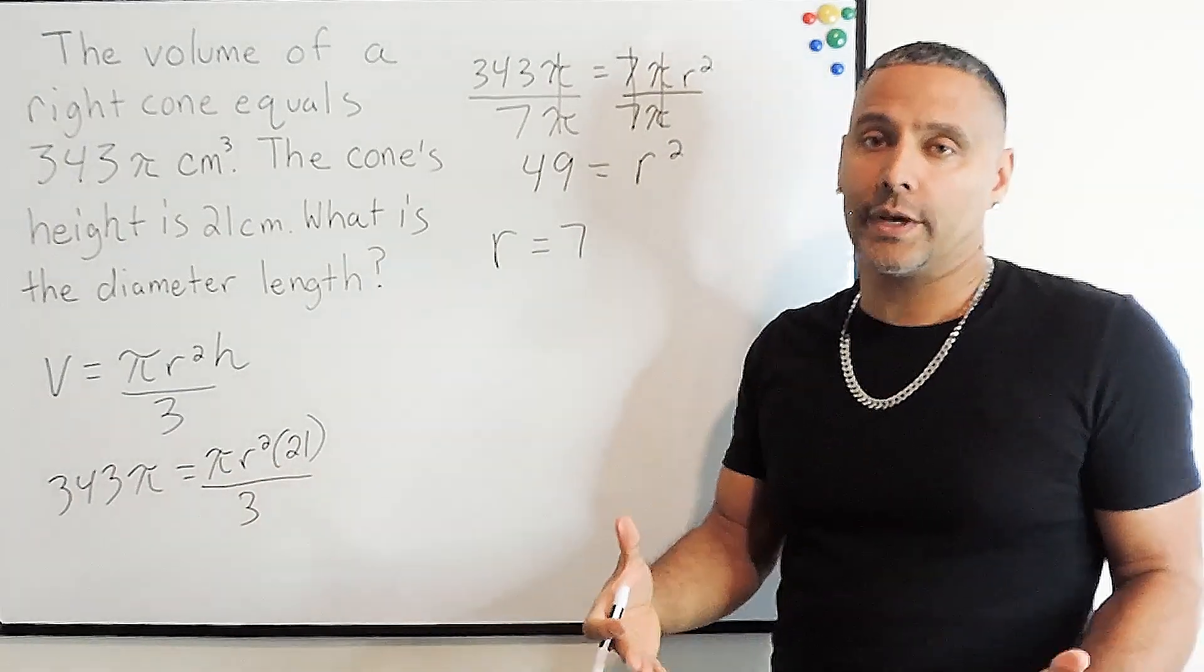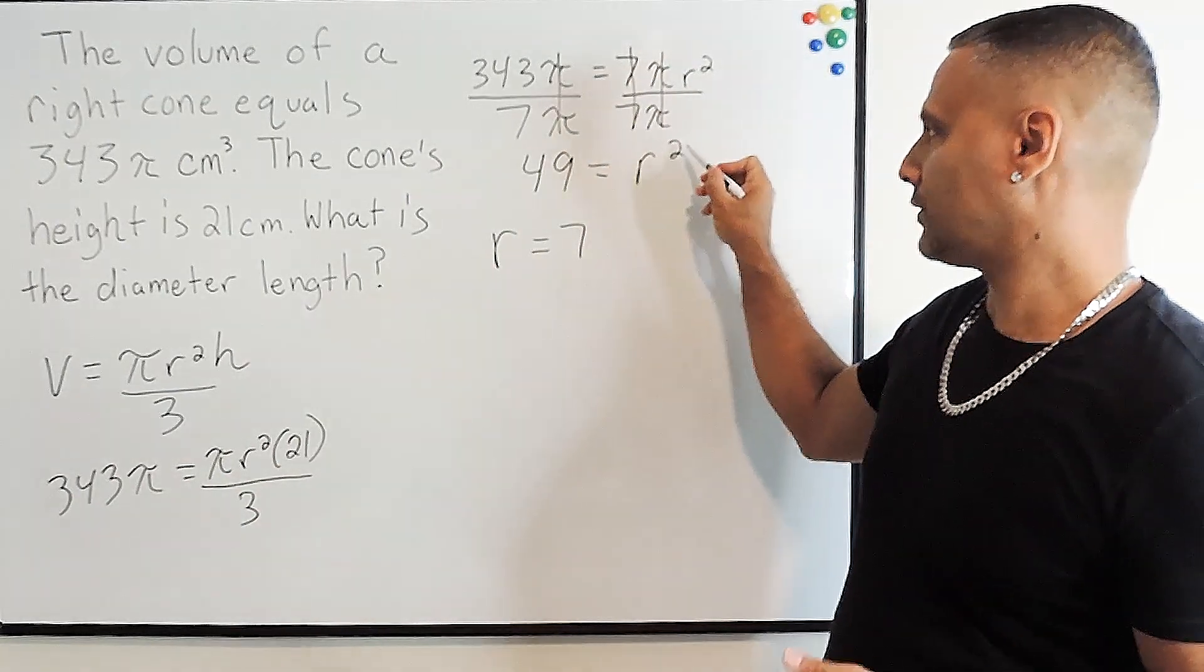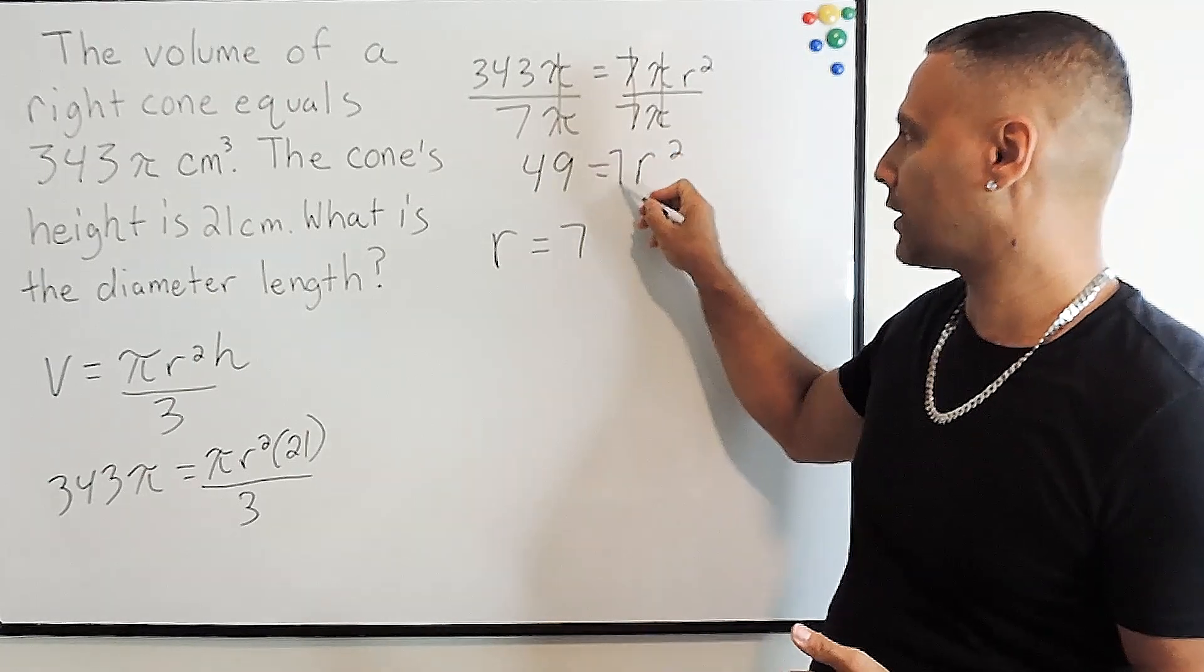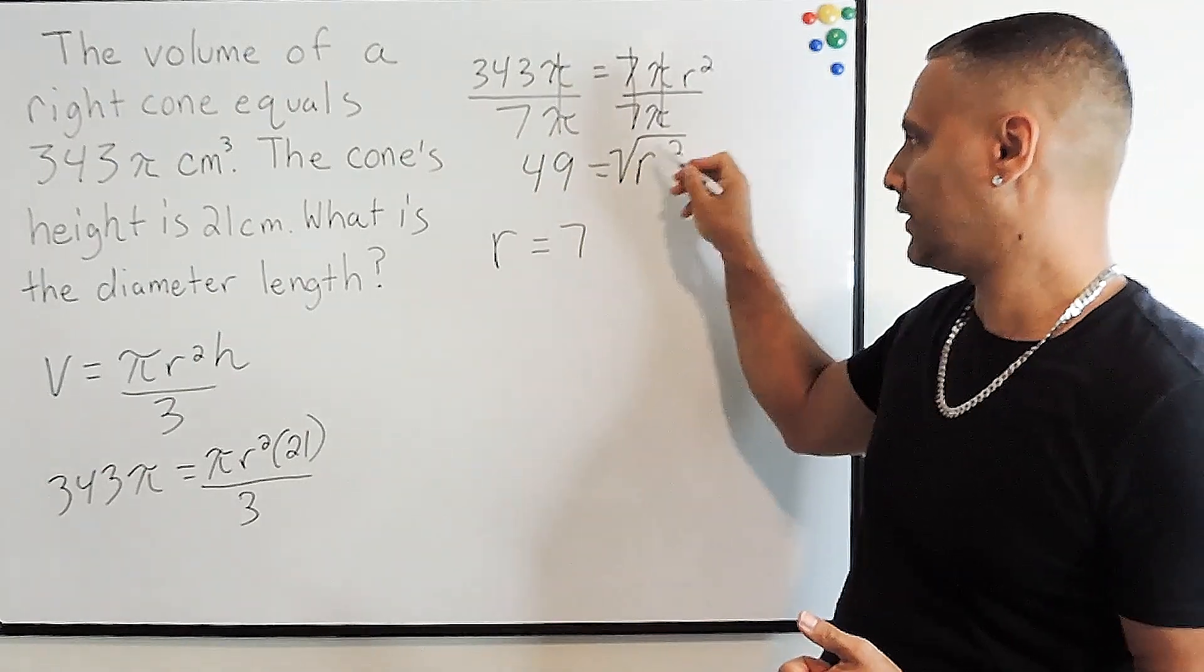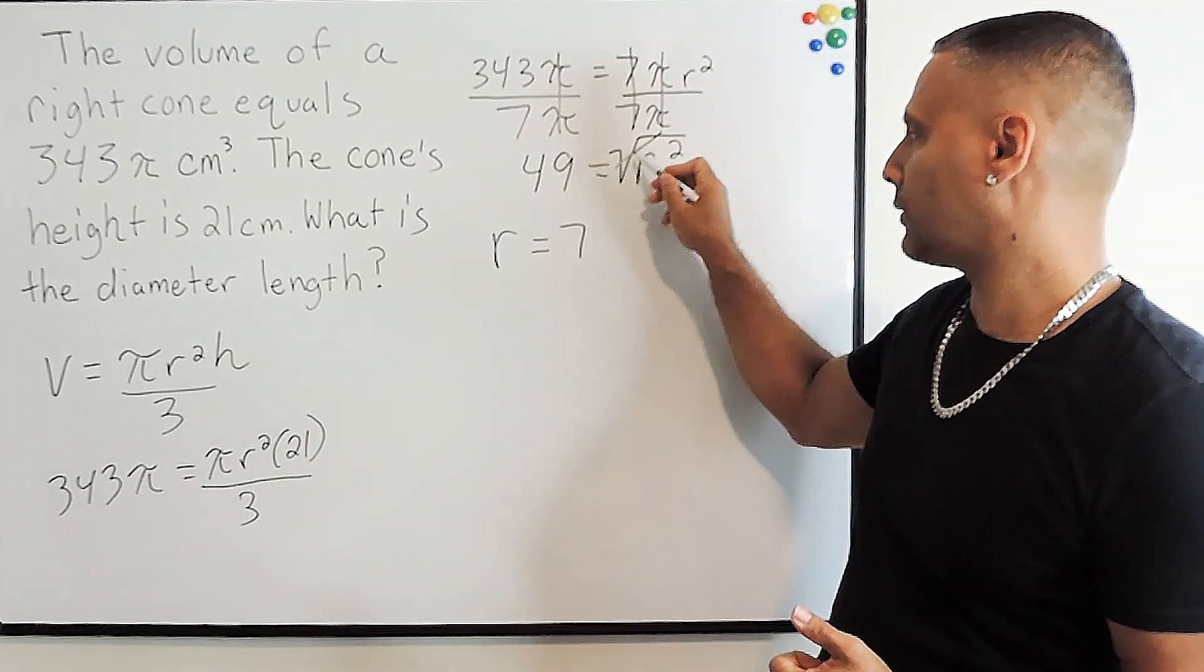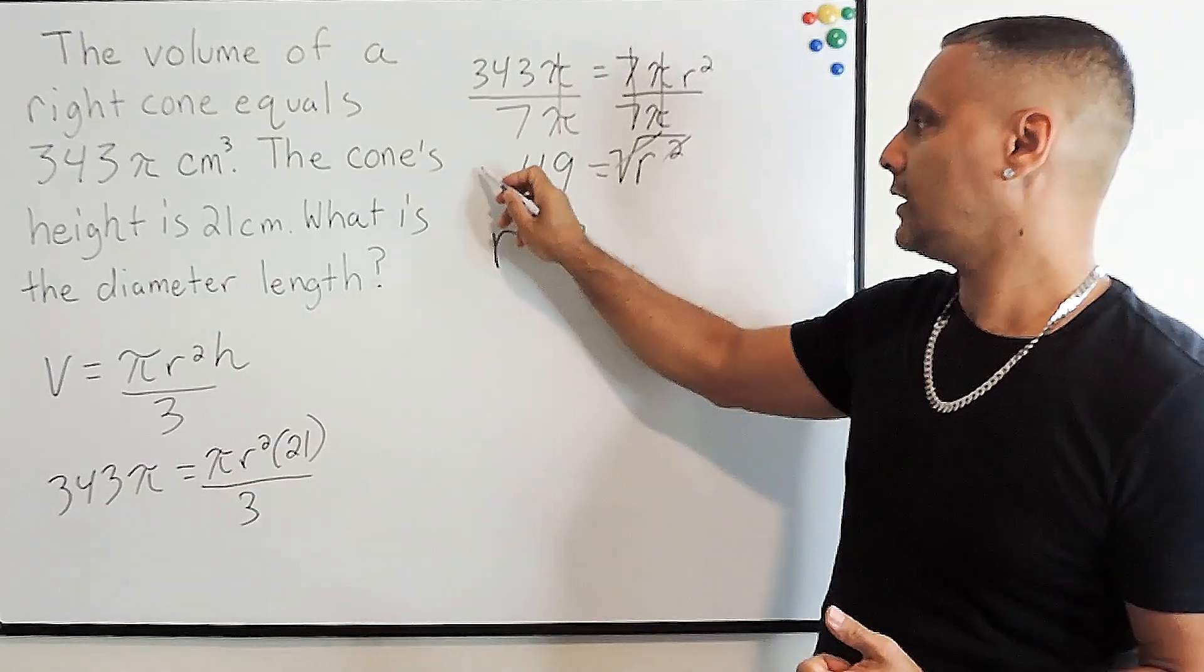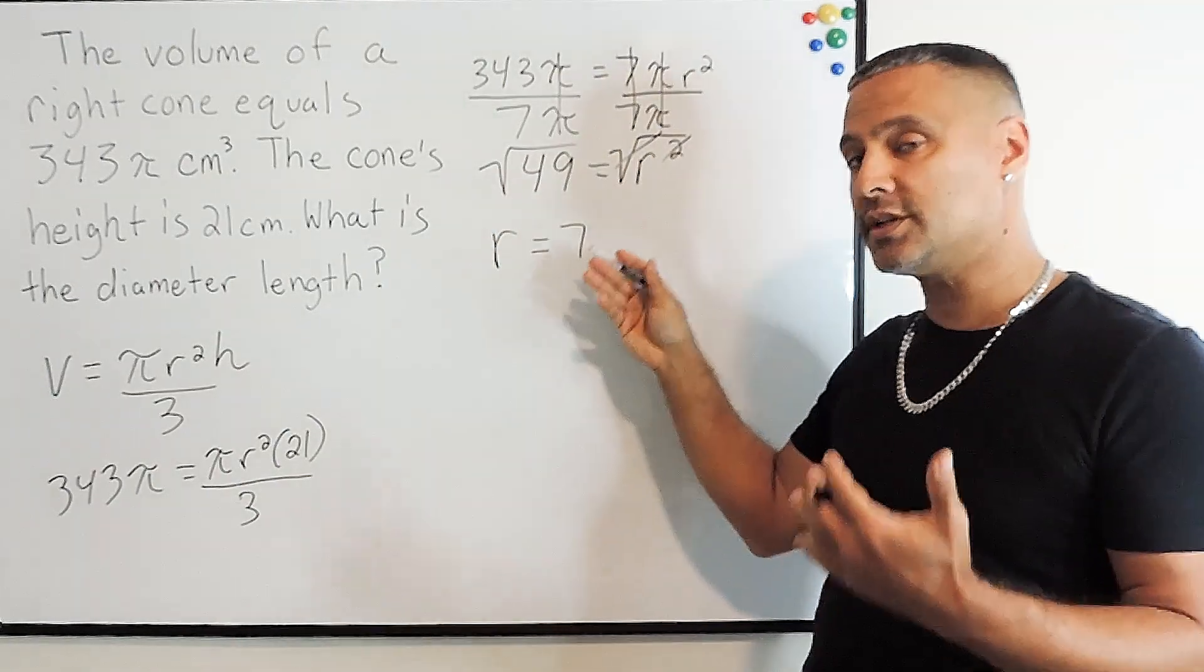Now, if I wanted to show my work all the way, what I could do is the inverse of squaring something, which is to square root this side, and a square root and a square cancel out, and we take the square root of 49, which is 7.